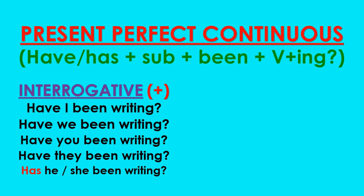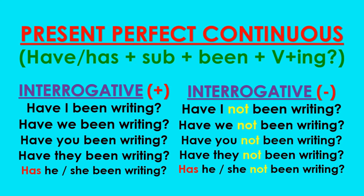In case of negative questions: 'Have I not been writing?' 'Have we not been writing?' 'Have you not been writing?' 'Have they not been writing?' And in case of third person singular, it will again be 'has': 'Has he or she not been writing?' Here we have come to the end of our discussion about the four forms of the present tense and how sentences are constructed in each form. In the next class, we shall discuss about the past tense. I advise every one of you to keep practicing at home. See you all in the next class. Thank you.